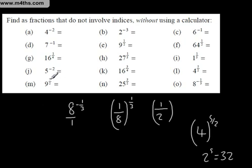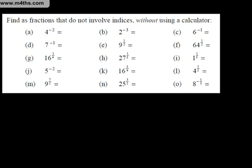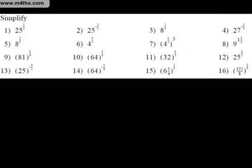9 to the 7 over 2 is going to give us 3 to the 7th power — it's going to be 3 times 3 times 3, and so on. So these are things we should start to be fairly comfortable with. 4 to the 3 over 2: we take the square root, which is 2, and 2 cubed is 8. 8 to the 2 over 3: we take the cube root of 8, which is 2, and raise it to the second power.